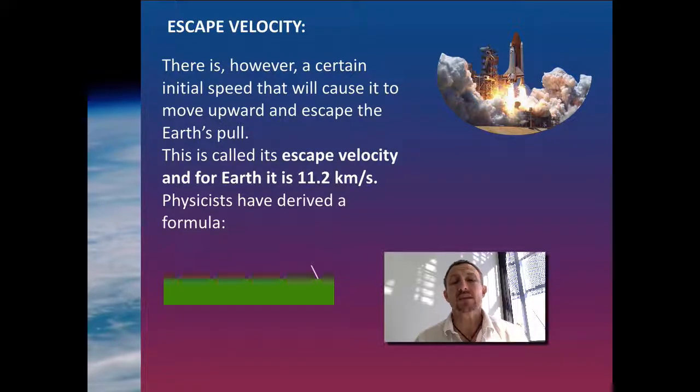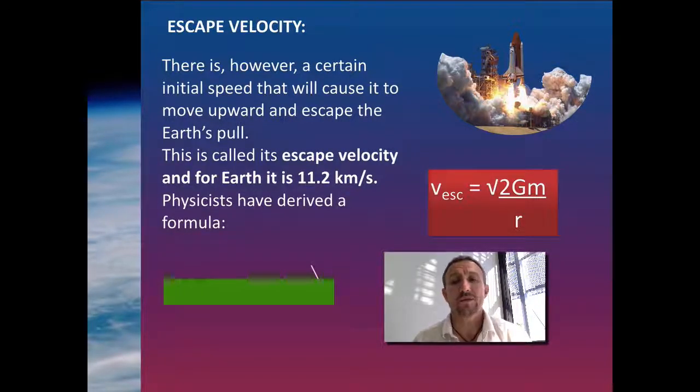That means we've got to hit a speed of 11.2 kilometers per second in order to get out of our atmosphere. Now basically the formula that we've got in order to work our escape velocity is given by the square root of 2 times g times m divided by r.